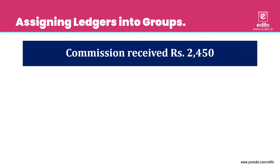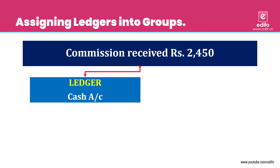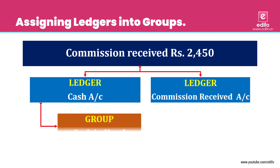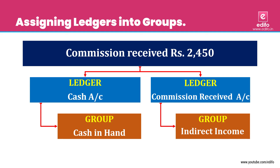Next transaction: commission received. It is an inflow of cash in the form of commission. Two aspects: cash account and commission received account. Cash belongs to 'Cash in Hand' and commission received is an 'Indirect Income', visible in the P&L account.